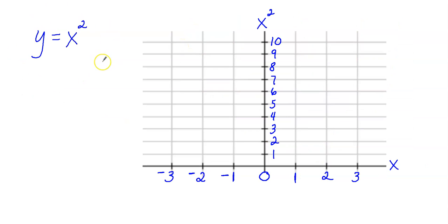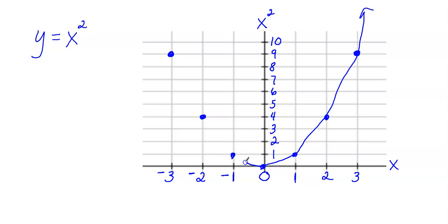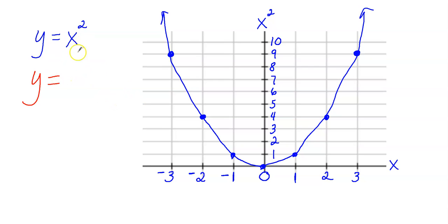Now let's take y equals x squared and flatten the graph — make it appear wider. I'll quickly plot y equals x squared again: 3 squared is 9, 2 squared is 4, 1 squared is 1, and negative 3 squared is 9. That's the parent function. Now to flatten it — a vertical compression — you multiply the x squared value by some number less than 1 but greater than 0, like 1 half, 1 third, or 2 fifths. I'm going to multiply by 1 half.